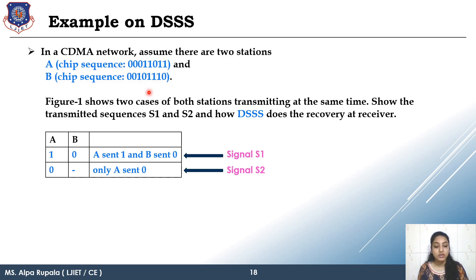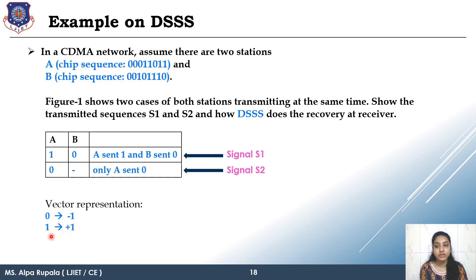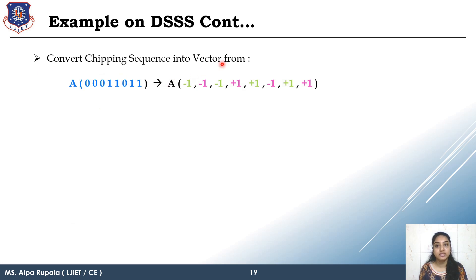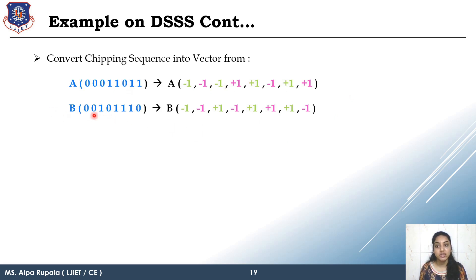For this purpose, we need to convert the chipping sequence bits into vector representation. The vector representation is carried out as: 0 will be represented as minus 1 and 1 will be represented as plus 1. So the chipping sequence of station A is: 0,0,0,1,1,0,1,1 — converting to: minus 1, minus 1, minus 1, plus 1, plus 1, minus 1, plus 1, plus 1. For station B, the chipping sequence is: 0,0,1,0,1,1,1,0 — similarly converted to vector form.